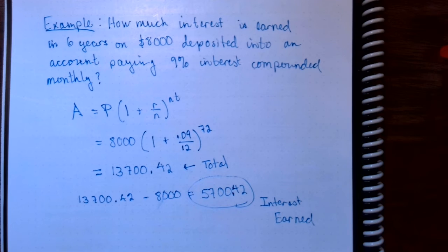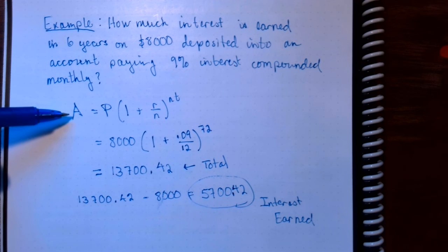Now I want you to compare this to what we did when we were working with simple interest. When you have the simple interest formula, that formula tells you how much interest you collect or earn. The compound interest formula tells you the entire amount you'll end up with.